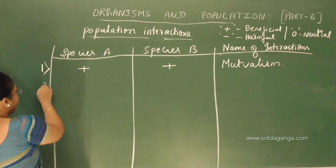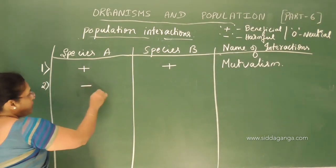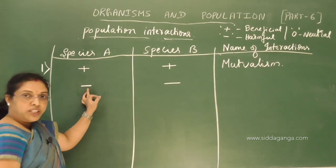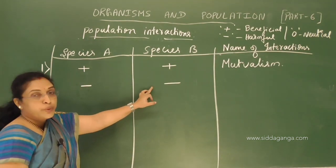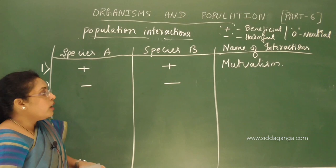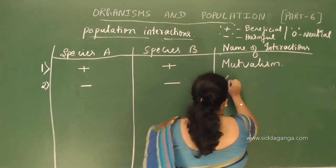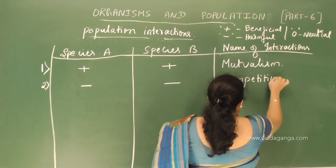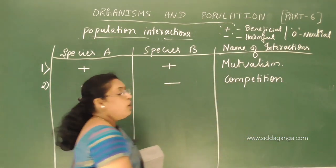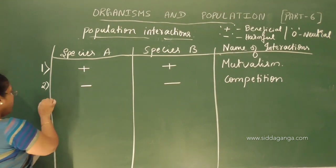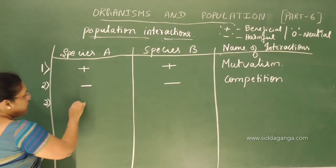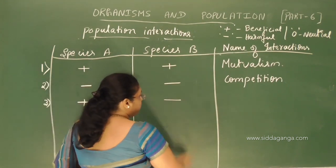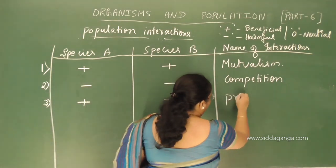When both species are harmed — minus minus — the type of interaction is called competition. Then when one species is benefited and one is harmed — plus minus — it is called predation. In predation, the predator is benefited whereas the prey is harmed.